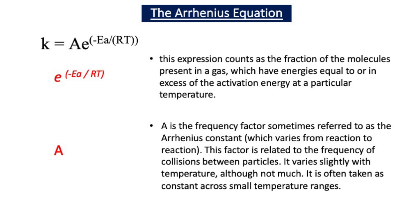If we look at this expression, e^(-Ea/RT) represents the fraction of molecules present in a gas which have energies equal to or in excess of the activation energy at a particular temperature. A is the frequency factor, sometimes referred to as the Arrhenius constant, and it varies from reaction to reaction. This factor is related to the frequency of collisions between particles and varies slightly with temperature, so it can often be taken as constant across small temperature ranges.